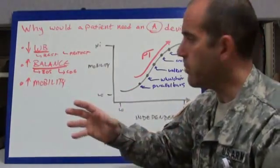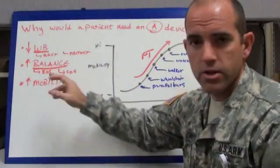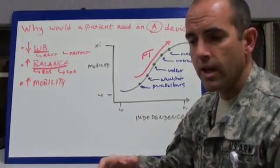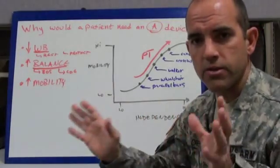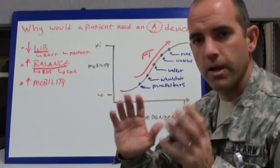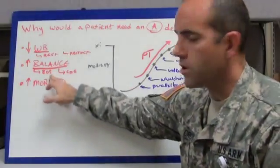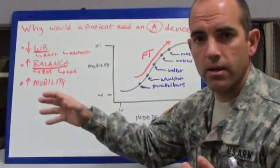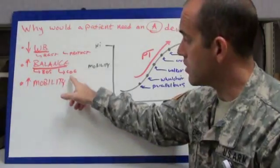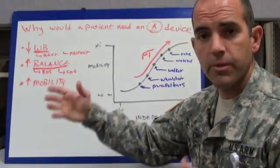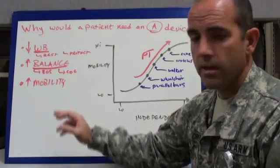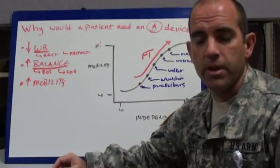Also, to improve their balance. You're studying in biomechanics the concept of a base of support. When a patient stands up, they have to have some degree of balance front and back, side to side. An assistive device would help them improve their base of support and help them maintain their center of gravity within that base of support.